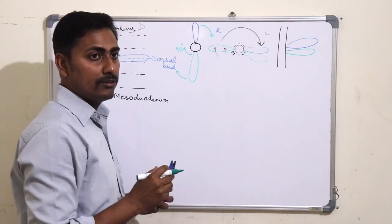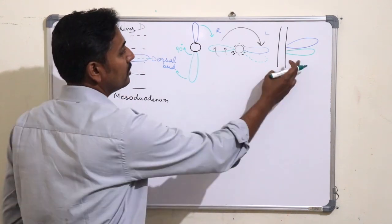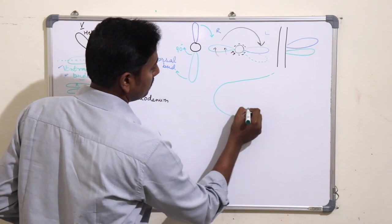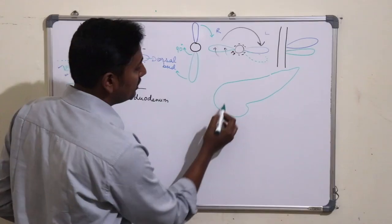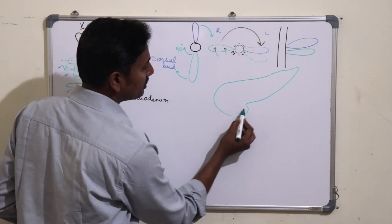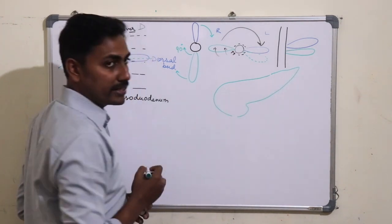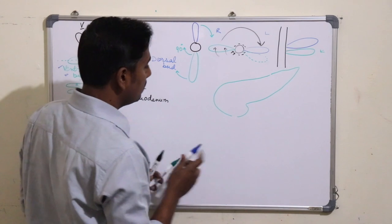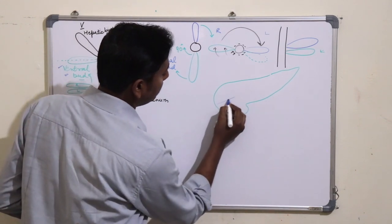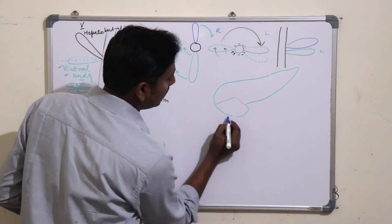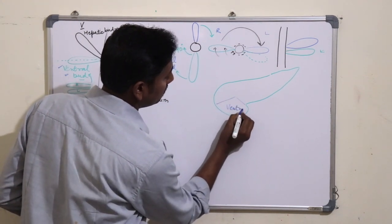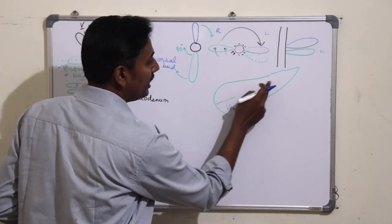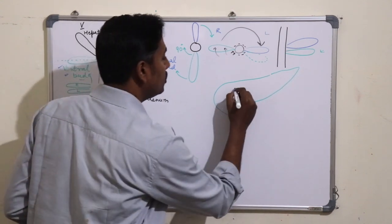Now let us see which part of the pancreas is formed by which bud. If this is the pancreas — this is the head of the pancreas, this is the uncinate process, this is the body, and this is the tail of the pancreas — we can say that the lower part of the head and the uncinate process is formed by the ventral bud, which lies below the dorsal bud. The remaining upper part of the head, and the body and tail of the pancreas, is formed by the dorsal bud.